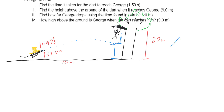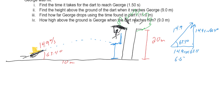Let's find the two components of the initial velocity. The initial speed is 14.9 m/s at 63.4 degrees. The x-component is 14.9 × cos(63.4°) = 6.67 m/s, and the y-component is 14.9 × sin(63.4°) = 13.3 m/s.